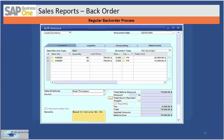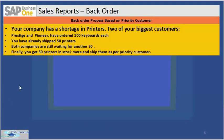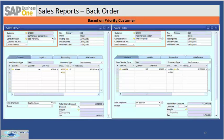The second scenario is based on the priority customer. Your company has a shortage of printers. Two of your biggest customers — Prestige and Pioneer — have ordered 100 keyboards each and you've already shipped 50 printers to both. Both companies are still waiting for another 50. Finally you get 50 more printers in stock and ship based on customer priority. Here are the two companies used in SAP Business One to illustrate this backorder scenario.